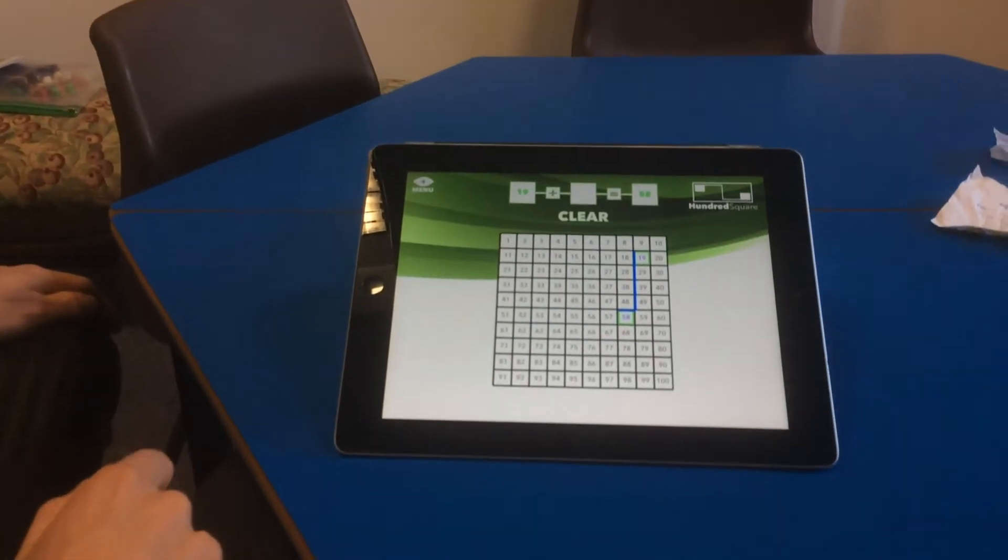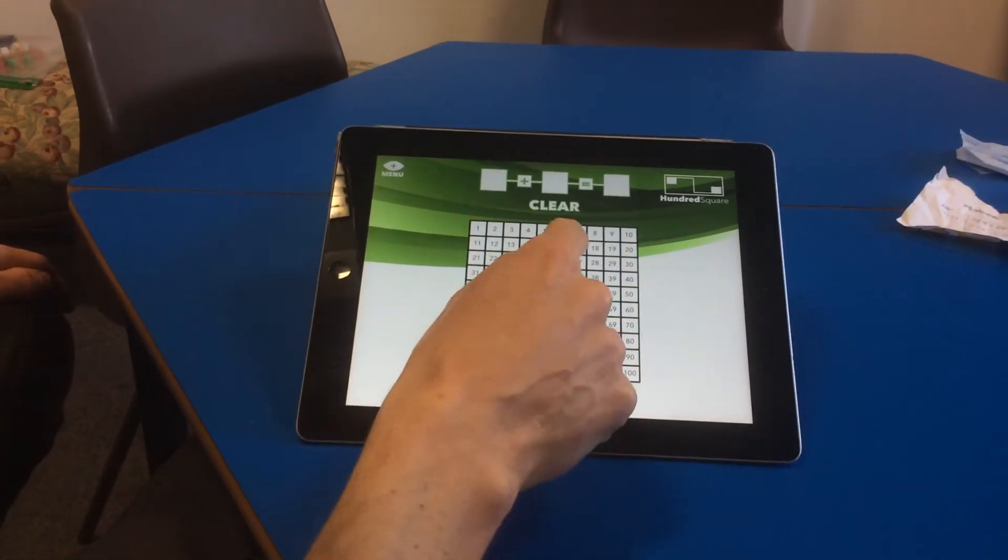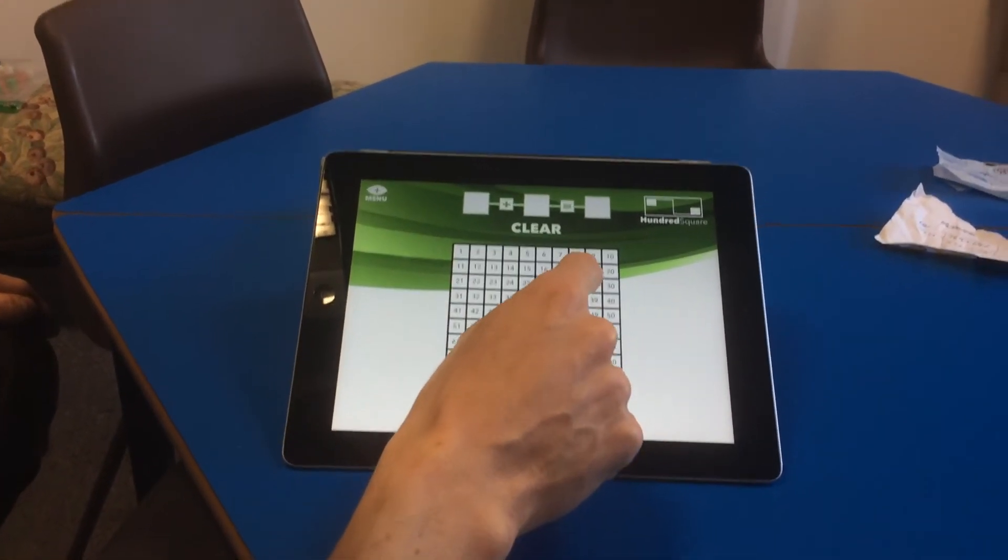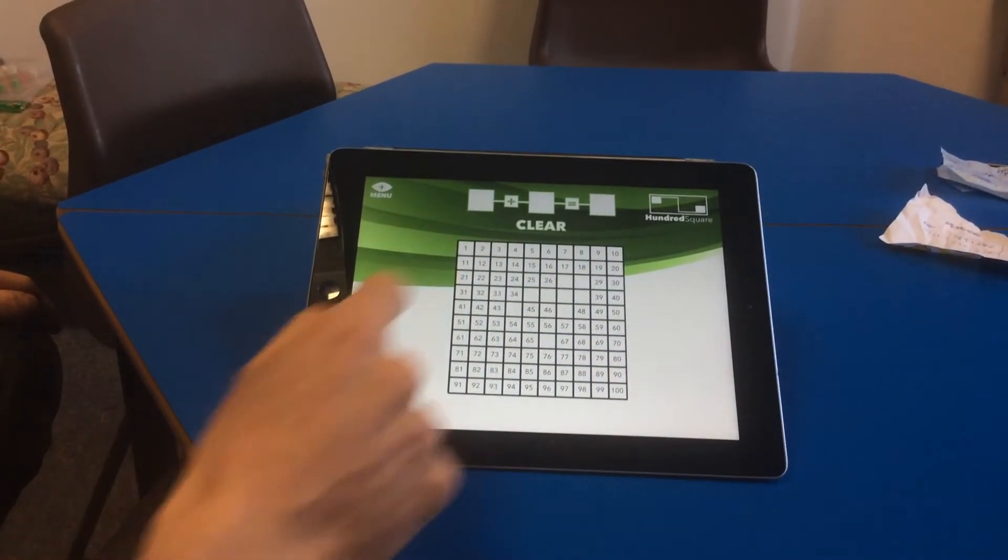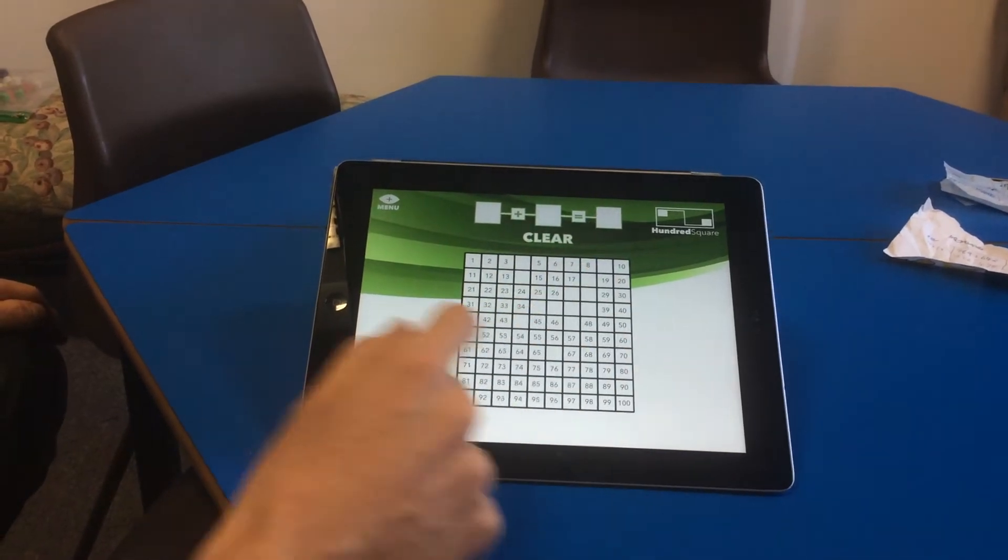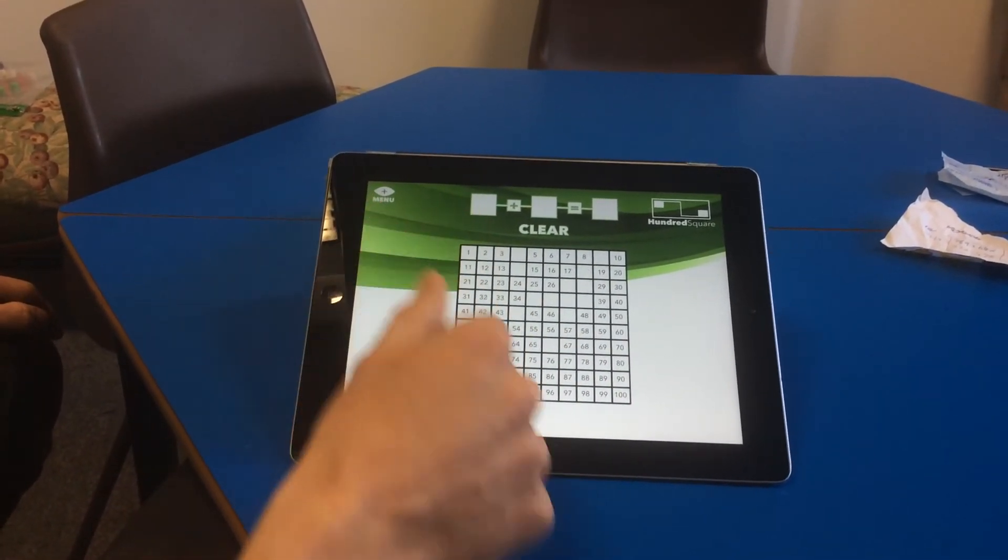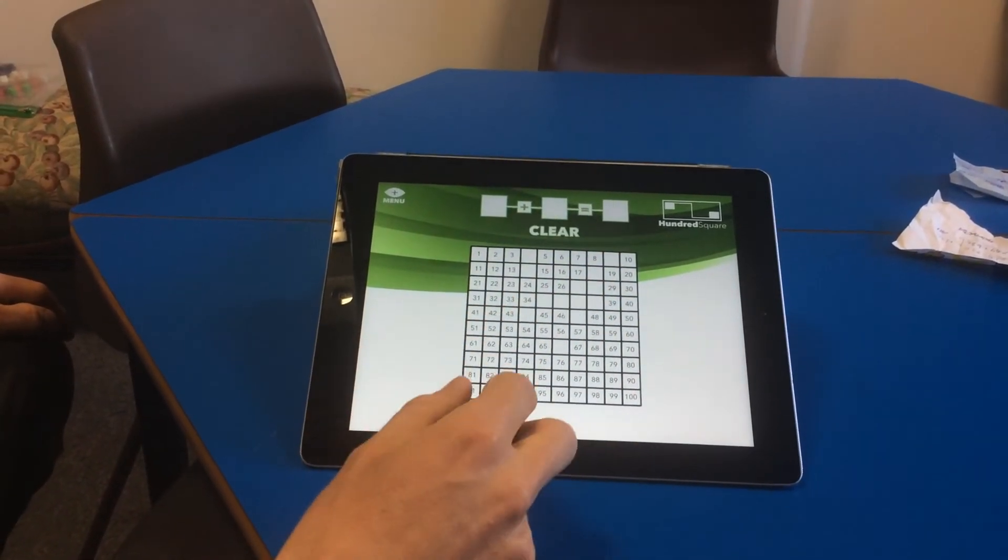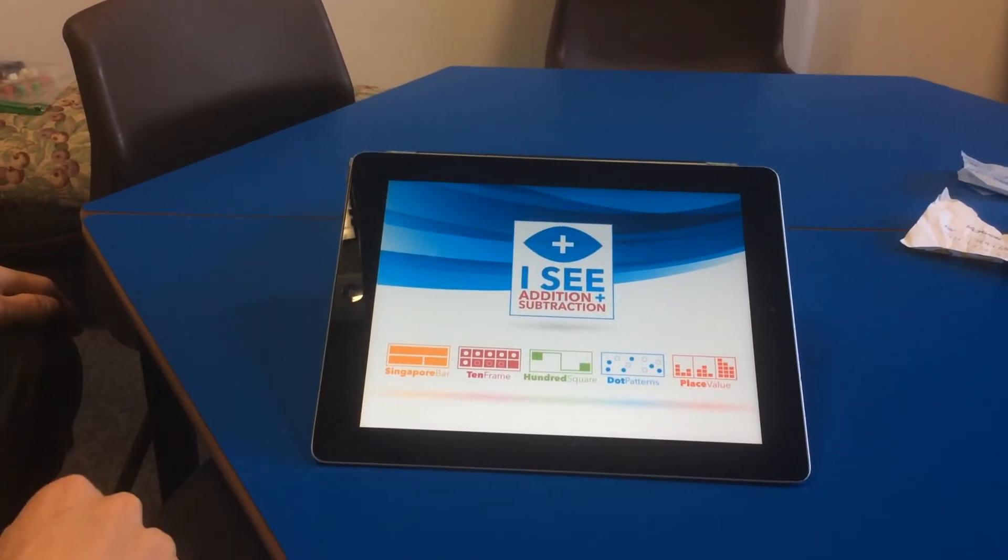Of course I could hide the 39 for children to work that out. The thing that I love about this section is when I'm creating a question I could remove any of the numbers that I want to make it more challenging. Equally I could take a photograph of any section of the hundred square for children to fill in the missing values which I know is a difficult thing to do.